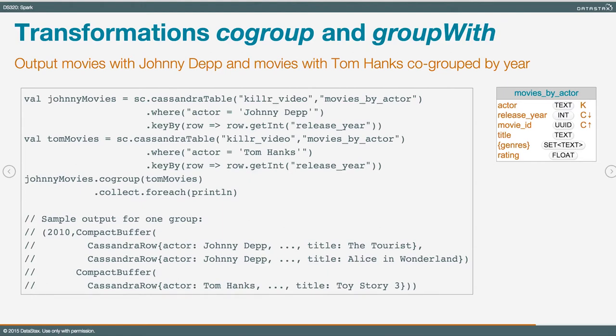We're showing limited output since that would be a potentially large data set. For 2010, we see two Cassandra rows for Johnny Depp followed by one Cassandra row for Tom Hanks. We did no type coercion into a tuple — we're just letting Cassandra give us rows back the way it normally does. If I wanted a list of all the movie titles, I could flat map that and convert those two collections into a single collection on the output.